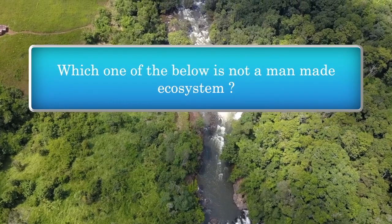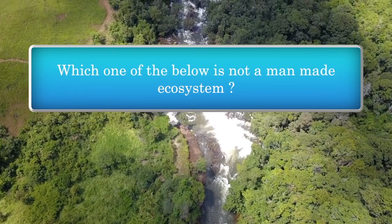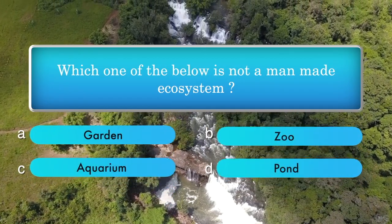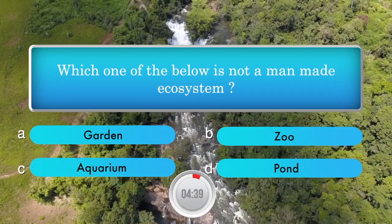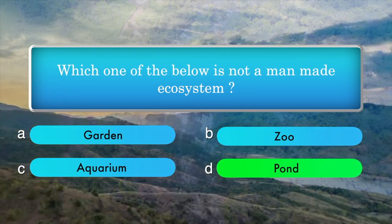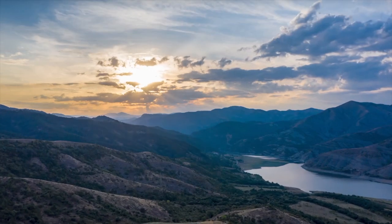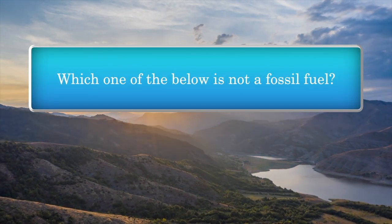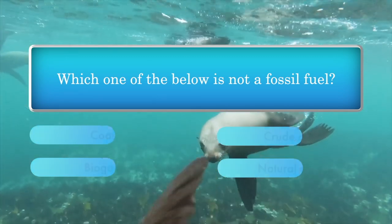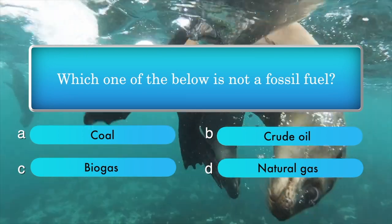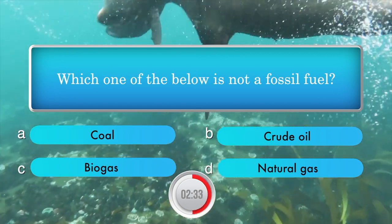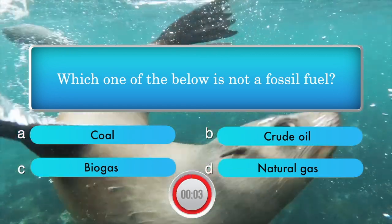Which one of the below is not a man-made ecosystem? Options: garden, zoo, aquarium, pond. Answer is pond. Which one of the below is not a fossil fuel? Options: coal, crude oil, bio gas, natural gas. Answer is bio gas.